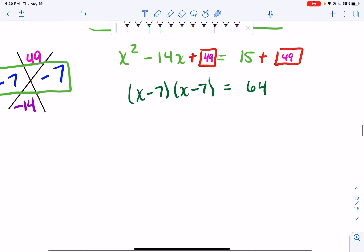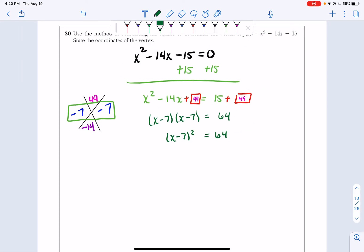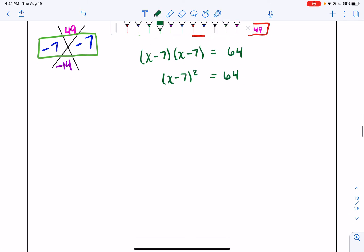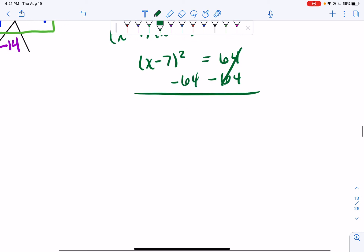However, mathematicians are very lazy. So we're going to rewrite x minus 7 times x minus 7 as x minus 7 squared. Now that we have our equation nice and written, we can subtract our 64 and bring it to the left-hand side. So we subtract 64, subtract 64. We now have x minus 7 squared minus 64, and that's equal to 0.